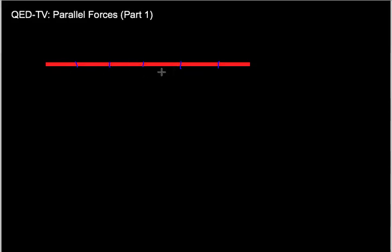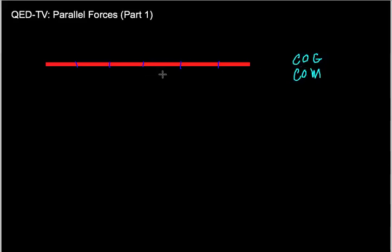Whenever we have a bar that has a weight, we can draw one vector that represents the weight of that bar, but the place you put that weight vector depends on whether it's uniform or non-uniform. If it's uniform all the way across, we put the weight right in the center — that's called the center of gravity or center of mass (COG or COM). For a uniform bar, the center of mass is in the middle. So let's say this bar has a weight of 20 newtons, and we draw that vector pointing down.